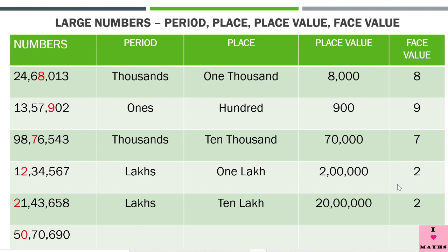Notice that in these two numbers we highlighted 2 placed at different places. I can give you a helpful analogy: think about a person — my face stays the same, but my value changes according to my relationship. For my mother I am her daughter, for my husband I am his wife. My value changes but my face remains the same. Similarly, the face value always remains the same for a particular digit, no matter where it is placed.